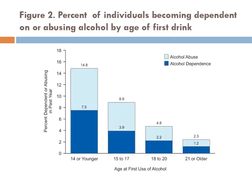The percent of individuals becoming dependent on or abusing alcohol decreases substantially as the age of first drink increases. If the first drink was at age 14 or younger, 14.8% are likely to abuse or become dependent on alcohol. That rate is much reduced if drinking starts at age 15 to 17, even more so at 18 to 20, and even further reduced if the first drink is at age 21 or older. However, these are correlations — the factors that cause early drinking may themselves contribute to later dependence.